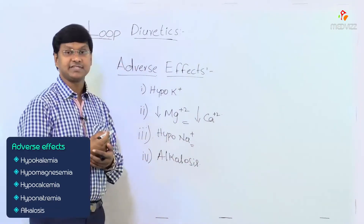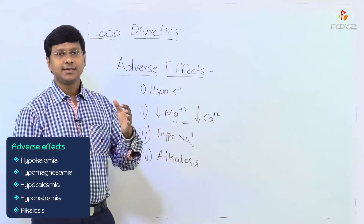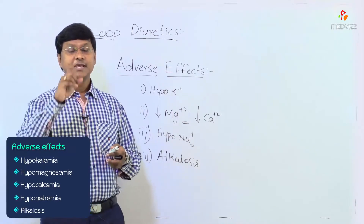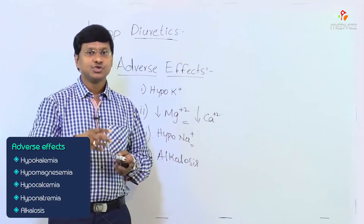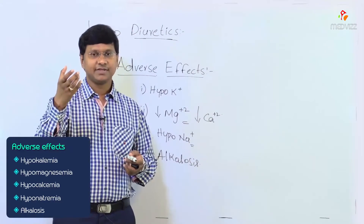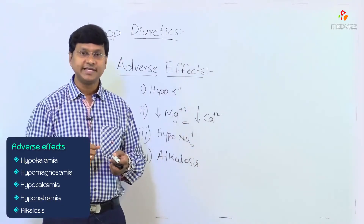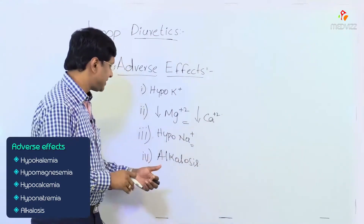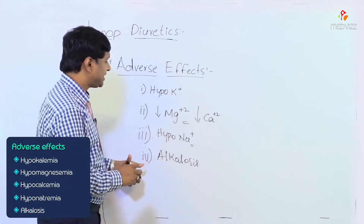Another important adverse effect is alkalosis. The sodium not reabsorbed at the thick ascending limb of the loop of Henle gets exchanged with H⁺ ions at the level of the distal tubules and collecting duct — at the intercalated cells. These H⁺ ions get excreted in the urine, and thereby the individual will have alkalosis.